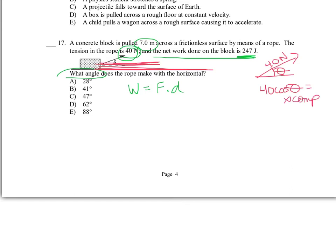Okay, so we know our work, 247. And our force is the 40 cosine and then whatever that angle is that we're solving for. And our displacement is the 7 meters.